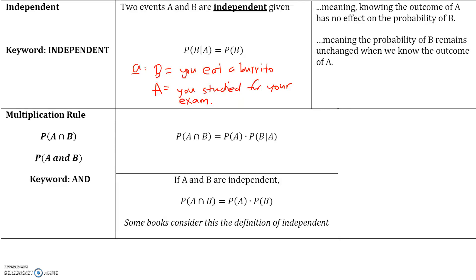Let's talk about the multiplication rule. The probability of A and B equals the probability of A times the probability of B given A. If the events are independent, then the probability of B given A is just the probability of B, so the formula simplifies to: probability of A and B equals probability of A times probability of B.